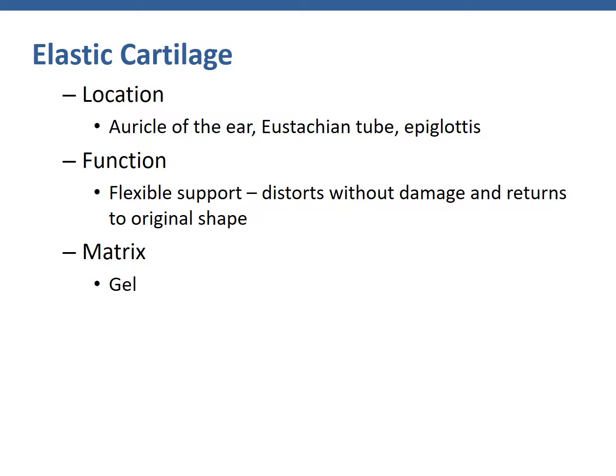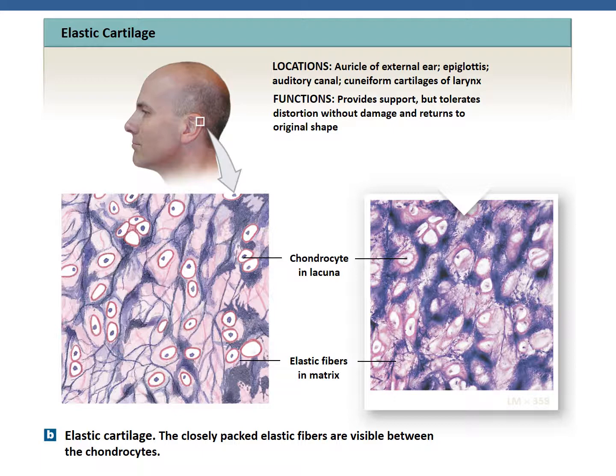The next type of cartilage is elastic cartilage. Elastic cartilage is found in the auricle or outer ear, as well as the Eustachian tube, which connects the middle ear to the back of the nose, and in the epiglottis. There is some debate on whether elastic cartilage is also found in the nose. Its function is to provide flexible elastic support — it distorts without damage and returns to its original shape. The matrix is also gel, but the prominent distinguishing feature is elastic fibers that dominate the matrix, providing support and allowing distortion without damage.